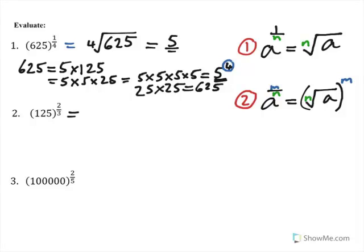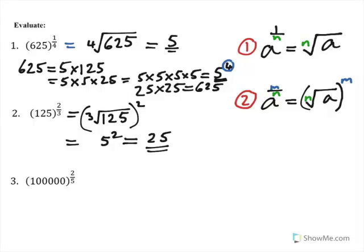This one here we're going to use rule number 2, where m is 2 and n is 3, so it's the cube root. The n stands for the root, so it's the cube root of 125, and then we've got to square it — m is 2 in rule number 2. The cube root of 125: 5 times 5 times 5 is 125, so that's 5, and then we've got to square it. 5 squared is 25. Be careful not to put 10 for an answer.